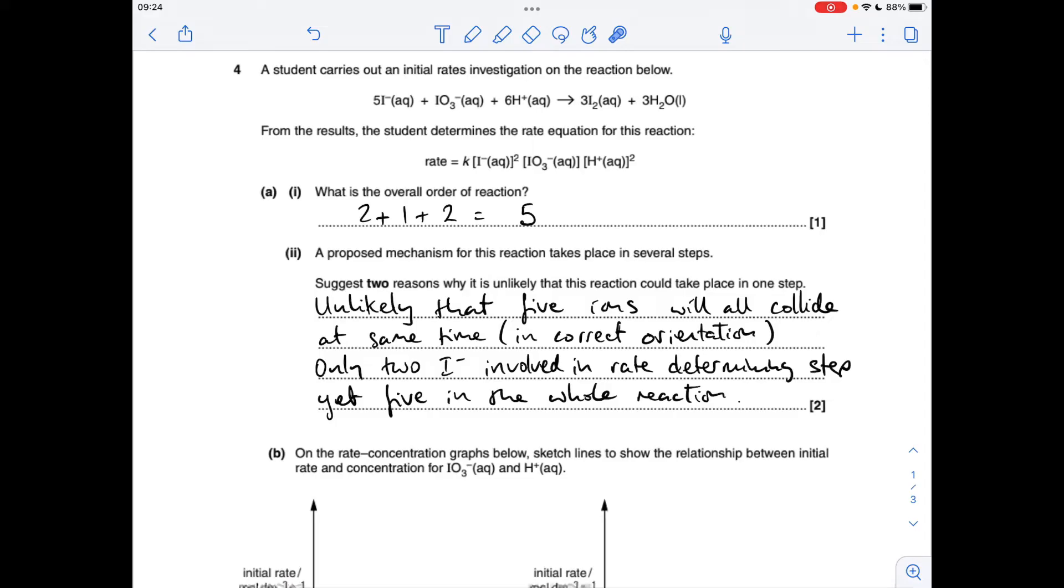So just two reasons why it's unlikely that this reaction could take place in one step. So the first reason I've given is if you look at the rate equation, there are 5 ions involved in the rate determinant step. Now it's very unlikely that all 5 of those ions are going to collide at the same time in the correct orientation, so there must be more than one step.